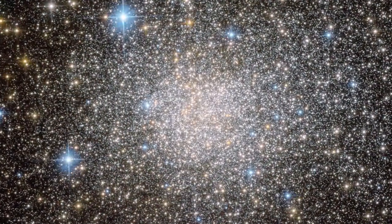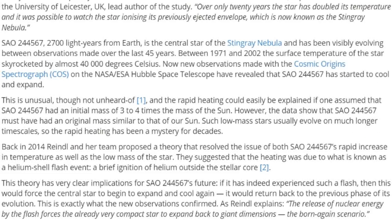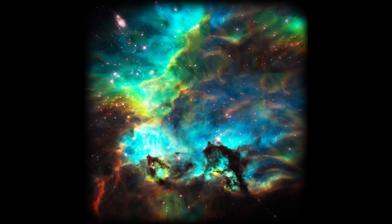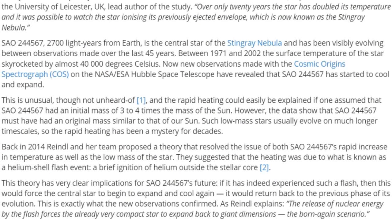SAO244567 is 2,700 light years from Earth and is the central star of the Stingray Nebula. And it has been visibly evolving between observations made over the last 45 years. Between 1971, the year I was born, and 2002, the surface temperature of the star skyrocketed by almost 40,000 degrees Celsius. Wow. I just heard Phil play at your climate change. Now, new observations made with the Cosmic Origin Spectrograph or COS, bro, on the NASA ESA Hubble Space Telescope have revealed that SAO244567 has started to cool and expand.